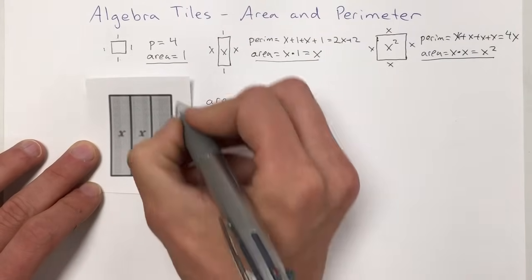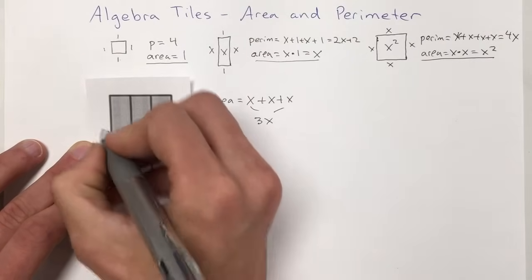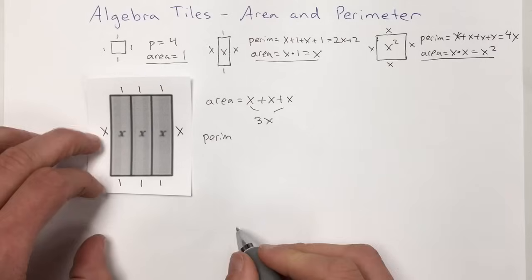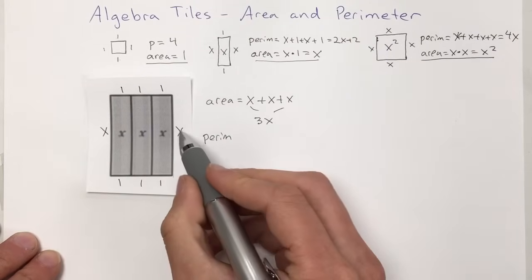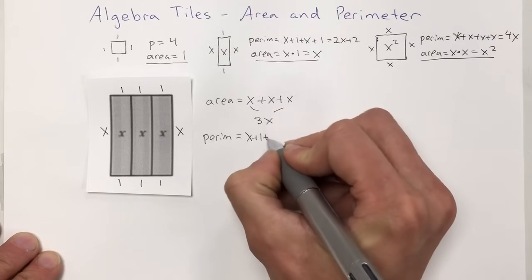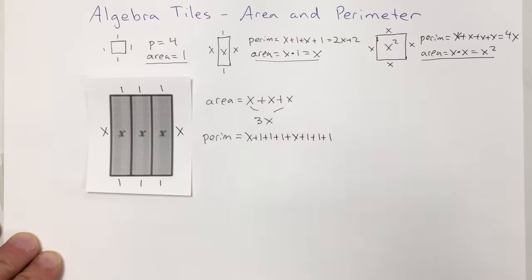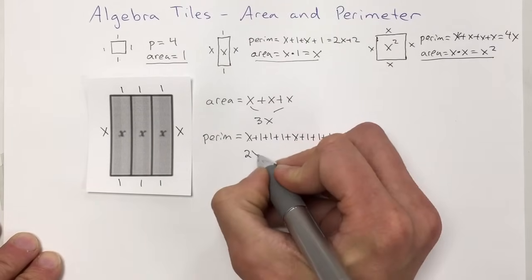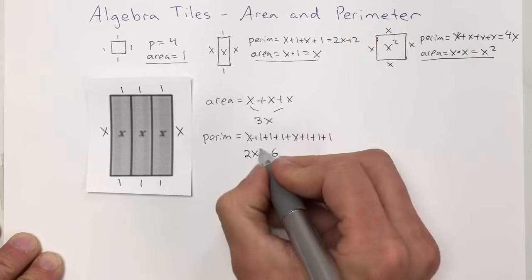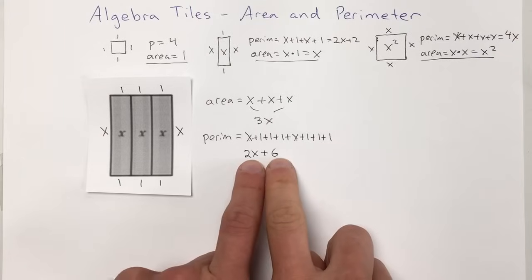For the perimeter, it's most helpful to write the values on each side and then add them up. The two long sides each equal x, and the tops and bottoms each equal one — so we have one, one, one on top and one, one, one on bottom. Going around: x plus one plus one plus one plus one plus x plus one plus one plus one. Combining like terms: two x's and six ones gives us a perimeter of 2x plus six.